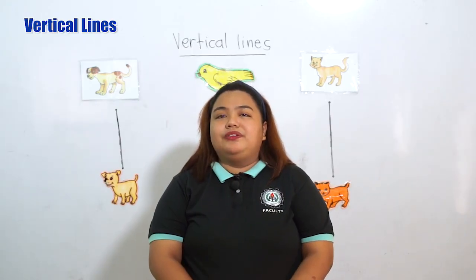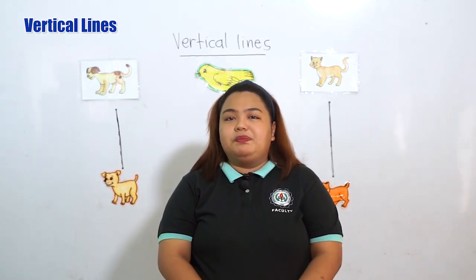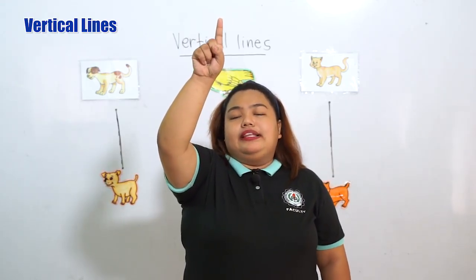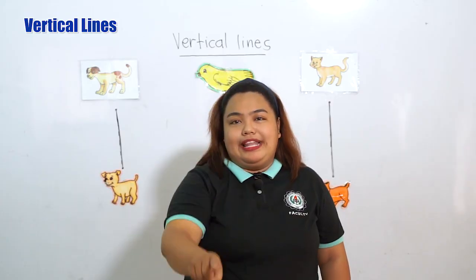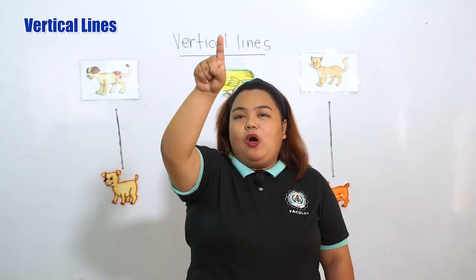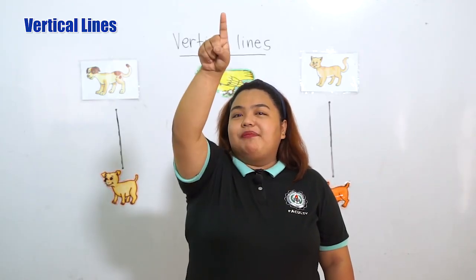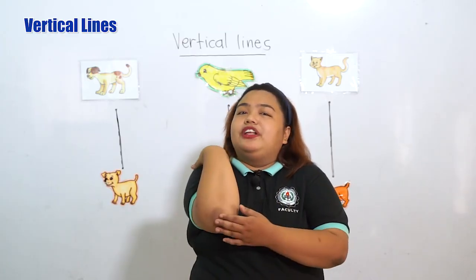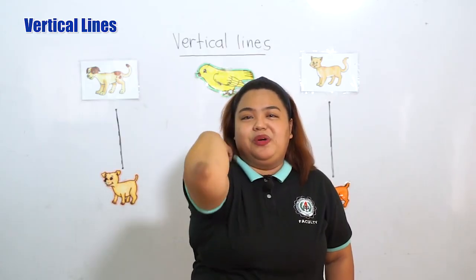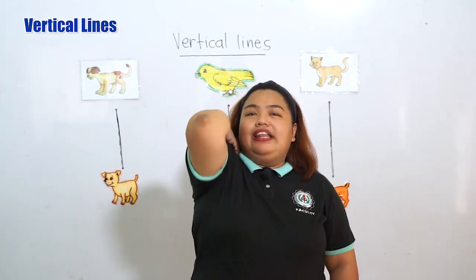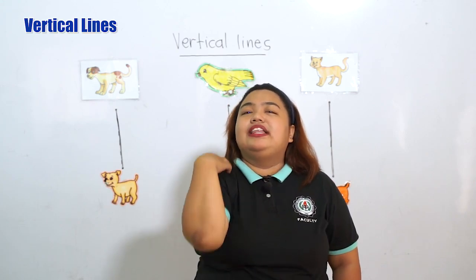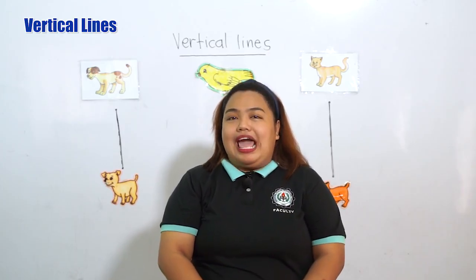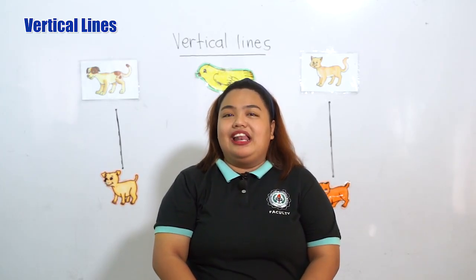This is how to write a vertical line. Can you please repeat after me? Pointers up. We're going to write a vertical line — up, going down. Once again, up, going down. How about we use our elbow to write a vertical line? Okay, we're going to use our elbow — up, going down. Again, up, going down. That is what we call vertical lines. Once again, say: vertical lines.